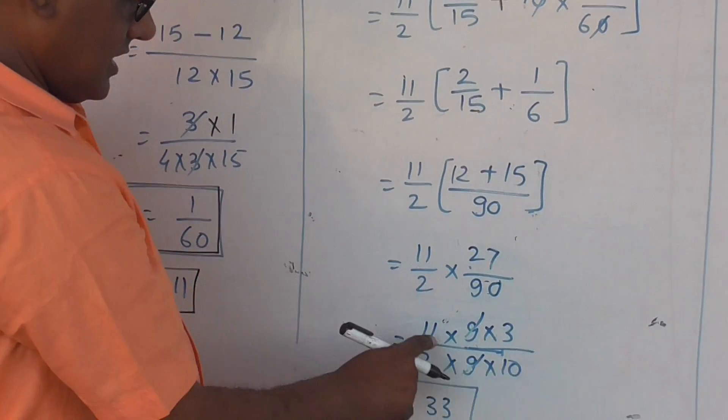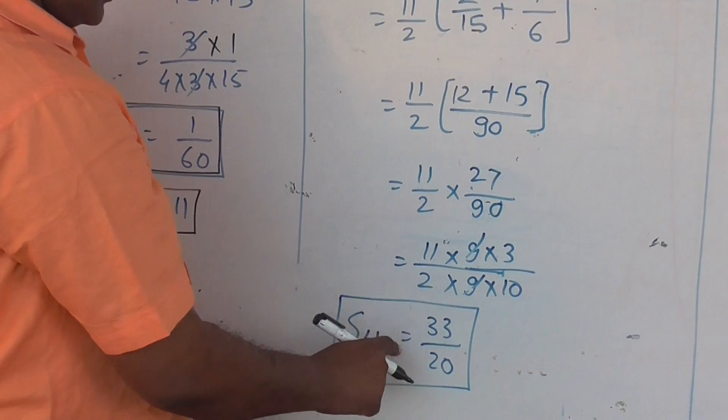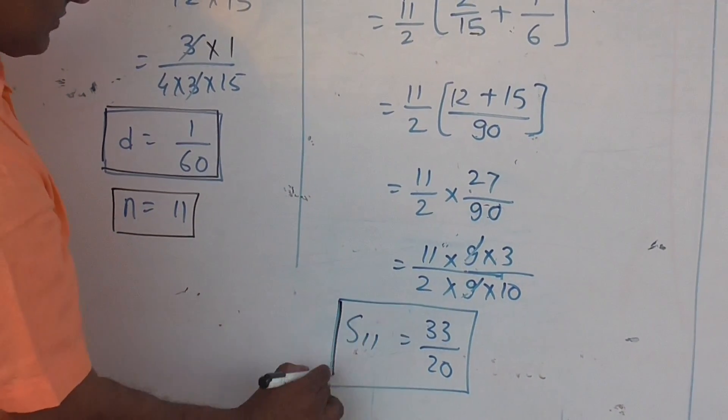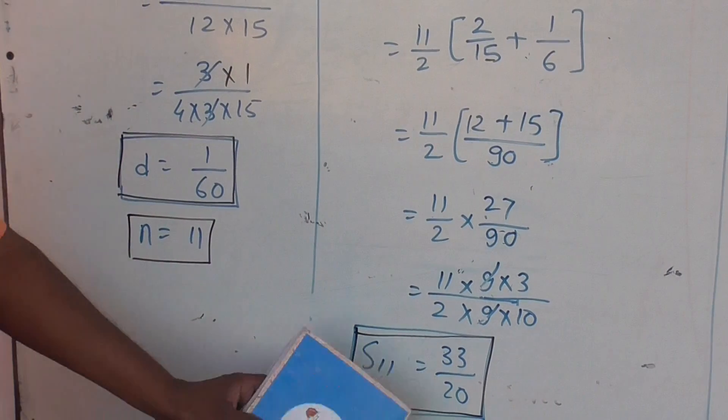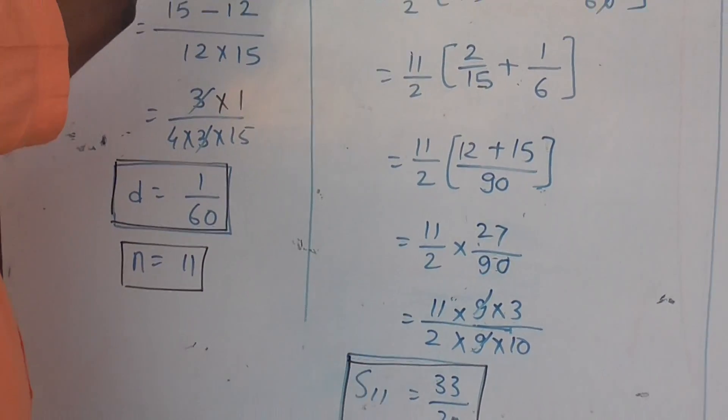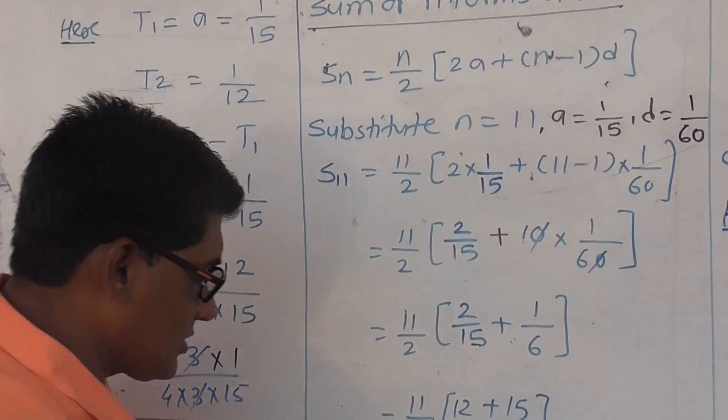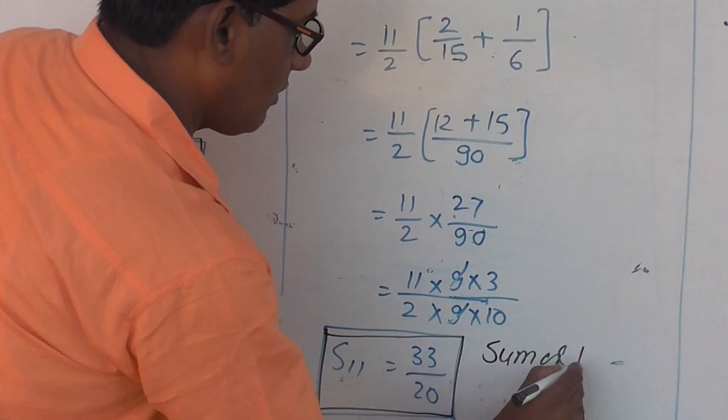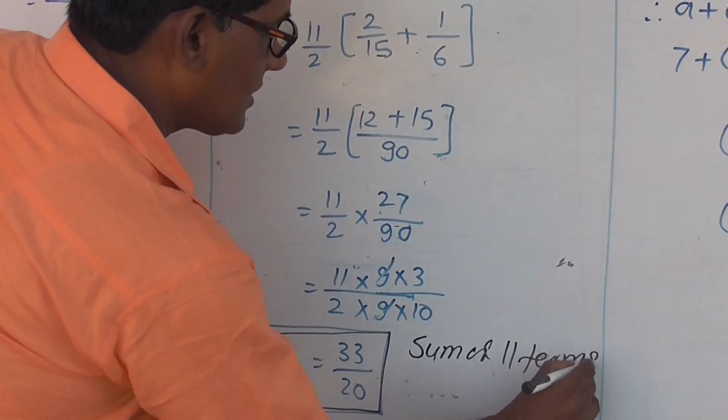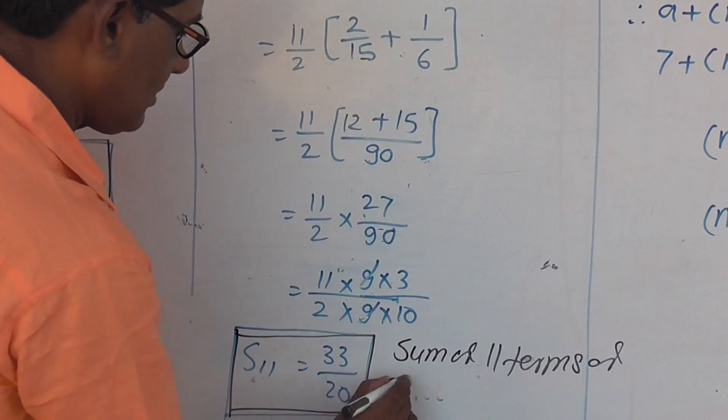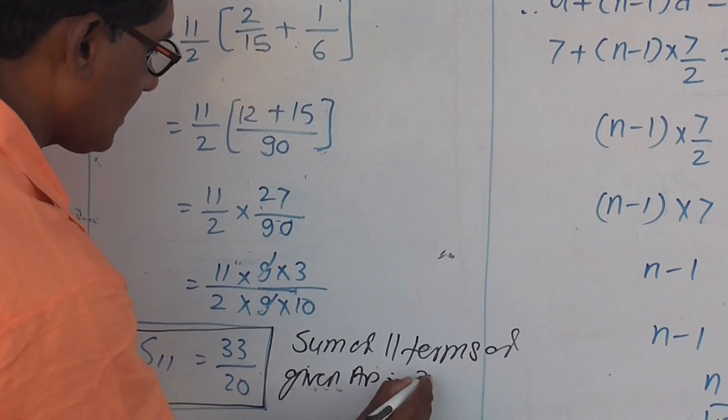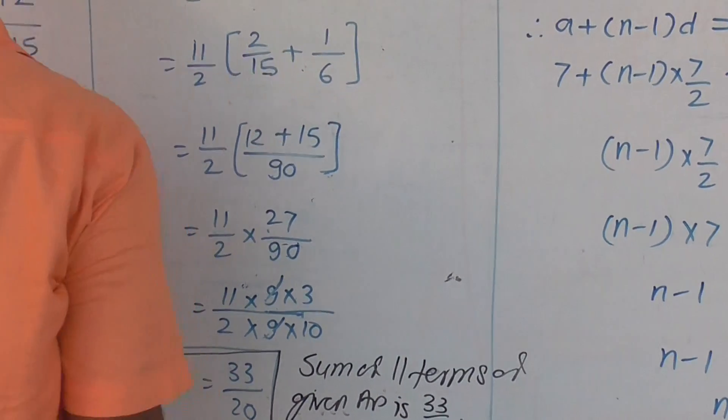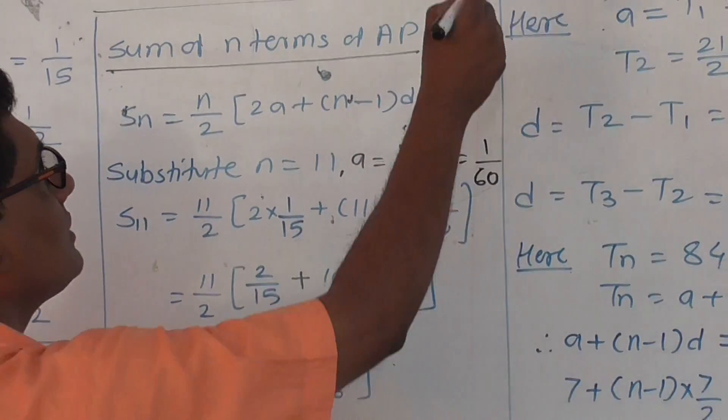Simplifying, 11 times 3 equals 33. Sum of 11 terms of given arithmetic progression is 33 by 20. In this way you should find out the sum of terms.